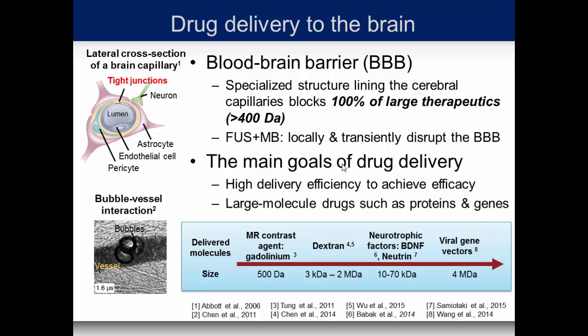We and others have figured out how to open this barrier transiently, selectively, and non-invasively with microbubbles. The main goal for drug delivery is to deliver at high efficiency the drug in question, including large molecule drugs. Most drugs effective in the brain, especially for neurodegenerative diseases such as Alzheimer's and Parkinson's, are very large proteins on the order of tens of kilodaltons, and adeno-associated viruses on the order of four megadaltons.